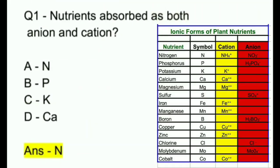Question 1. Nutrients absorbed as both anion and cation? A. Nitrogen. B. Phosphorus. C. Potassium. D. Calcium. And the right answer is Nitrogen.